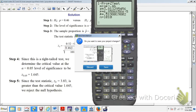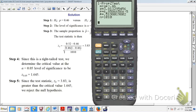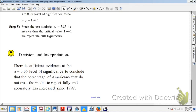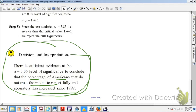Okay? So then let's show what that means in words. So you don't just want to say, I reject the null. At the very end, you want to throw back the context of the problem. So decision and interpretation. There is sufficient evidence at the 5% level of significance to conclude that the percent of Americans that do not trust the media has increased since 1997. See, that's important. You always want to throw it back and interpret the problem.